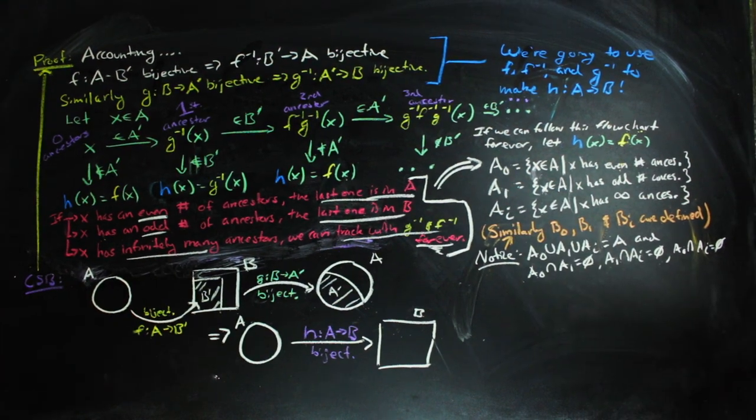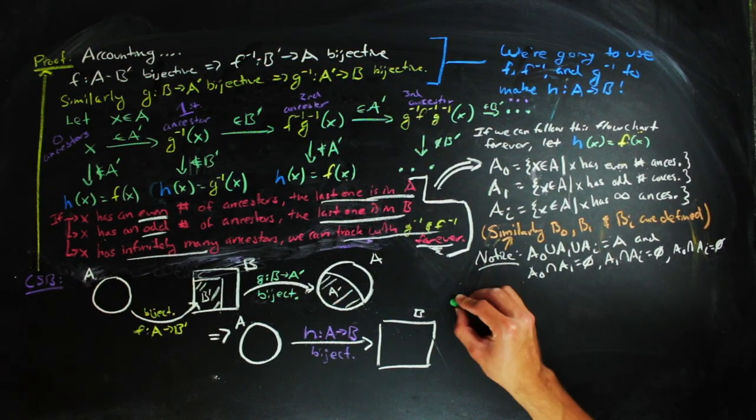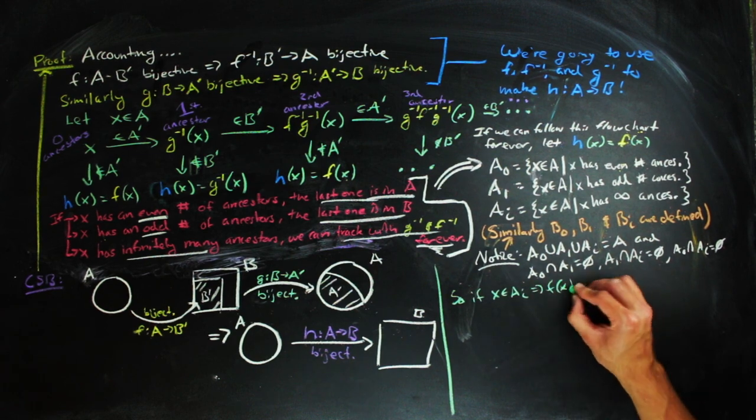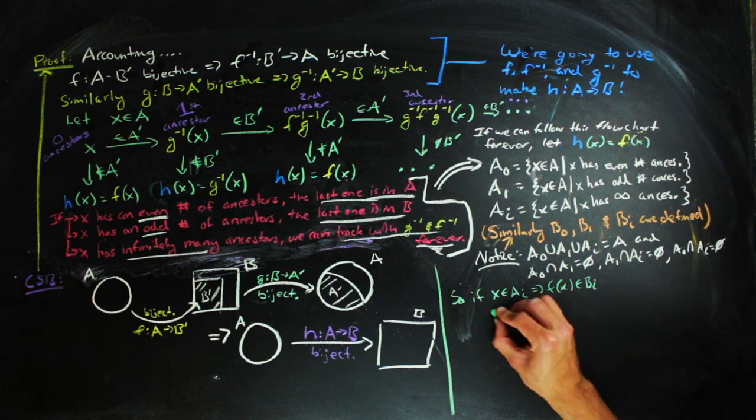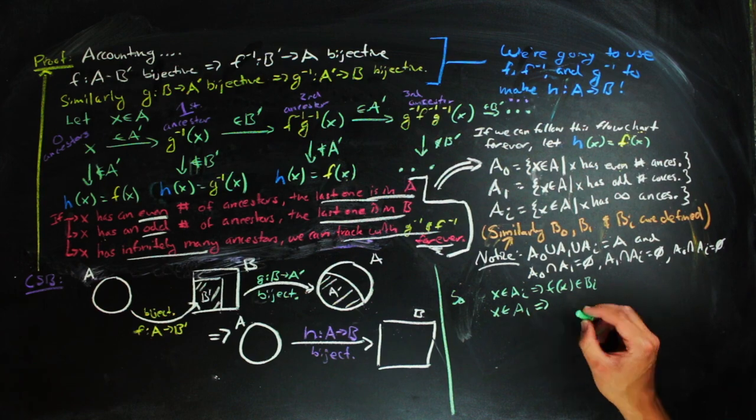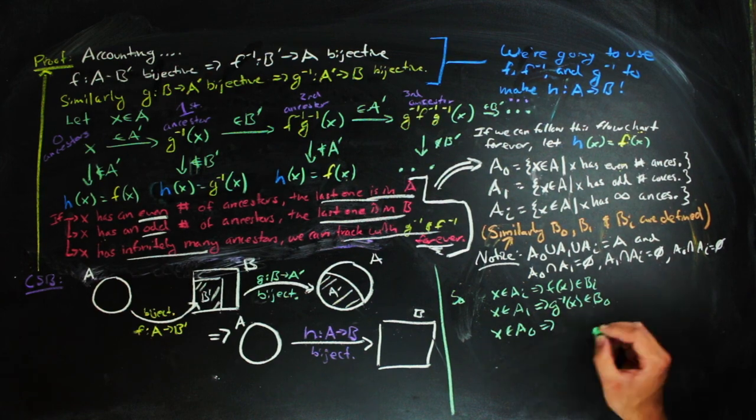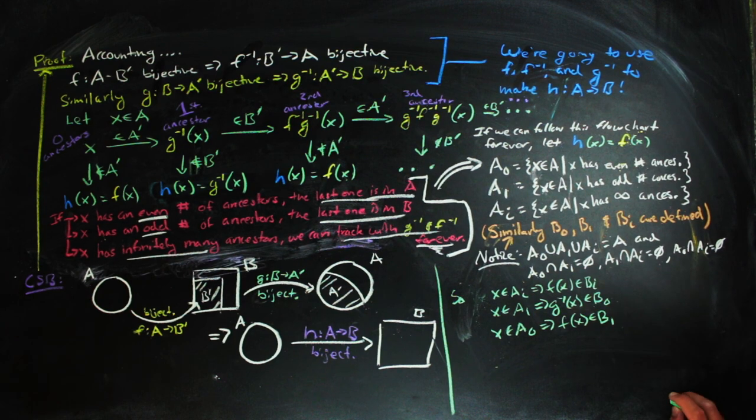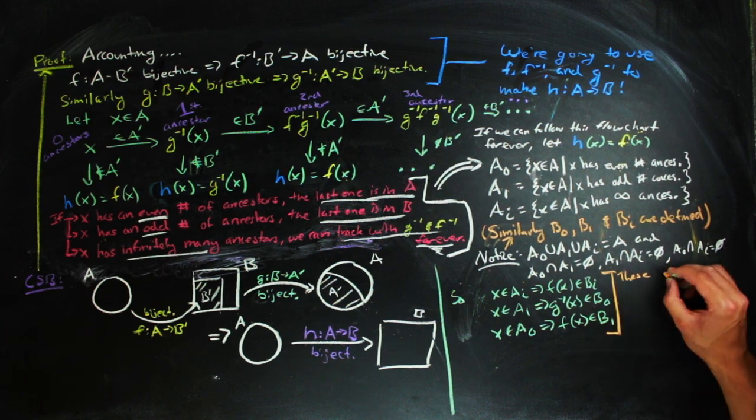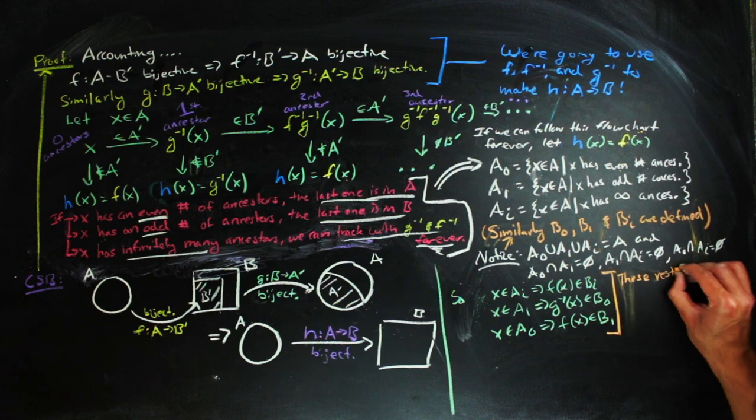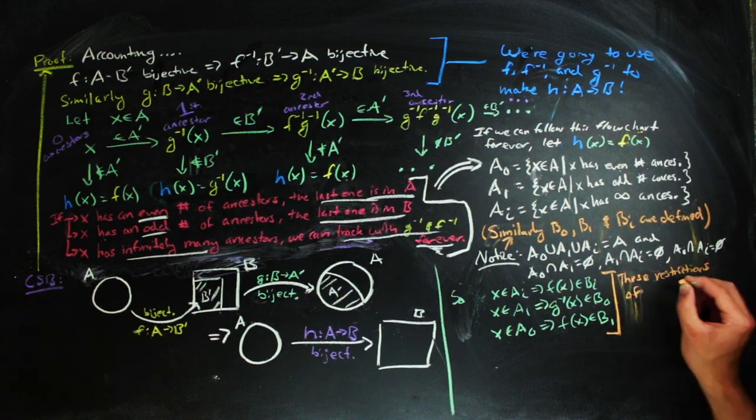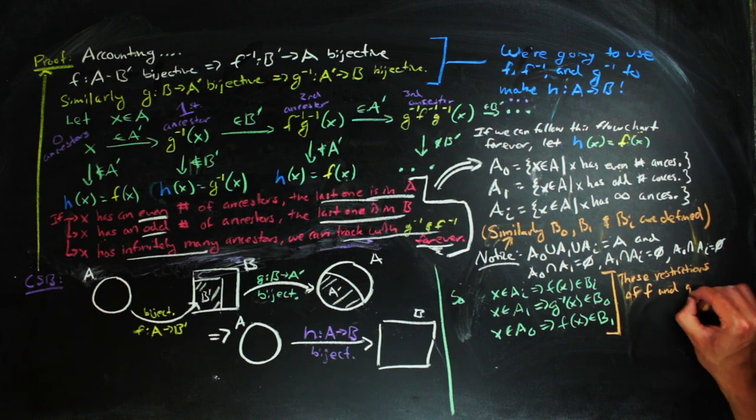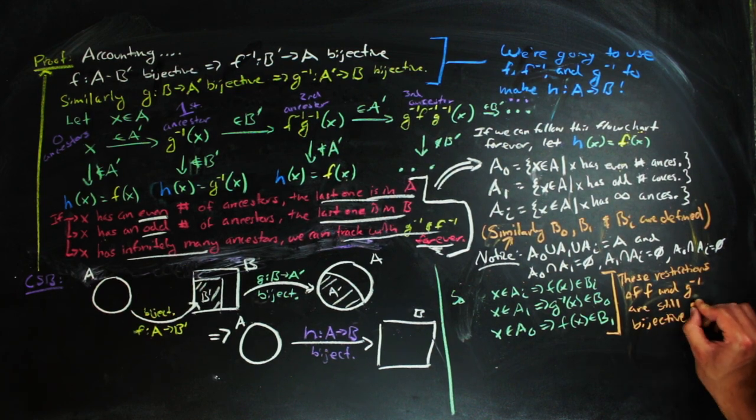Now, if X has an even number of ancestors, F of X will have an odd number of ancestors, and be in B. And since F is a bijection to a subset of B, when we restrict F to A0, it will retain the property of being 1 to 1 and onto. Thus, F restricted from A sub 0 is a bijection from A sub 0 to B sub 1. Similarly, F restricted from A sub i to B sub i, and G inverse restricted from A sub 1 to B sub 0 are also bijections.